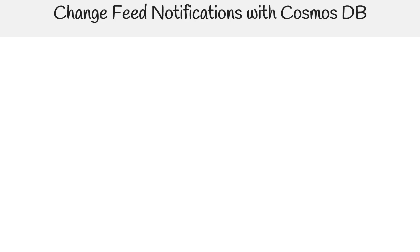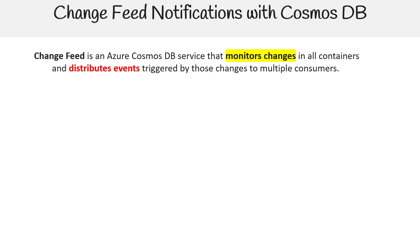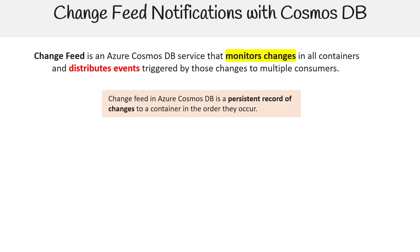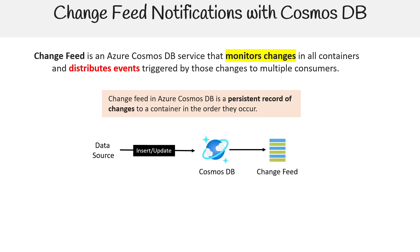Let's talk about a very useful feature in Cosmos DB known as change feed. Change feed is a service that monitors changes in all containers and distributes events triggered by those changes to multiple consumers. Change feed in Azure Cosmos DB is a persistent record of changes to a container in the order that they occur.